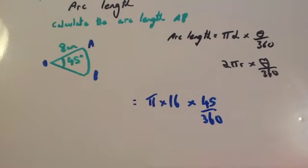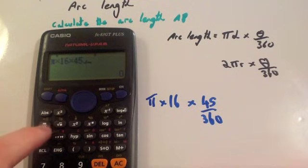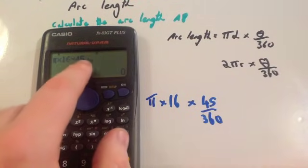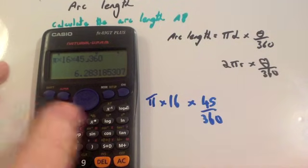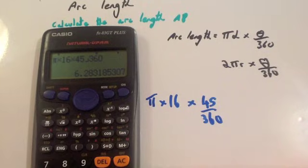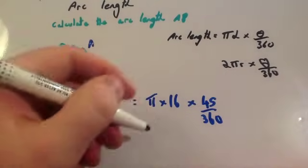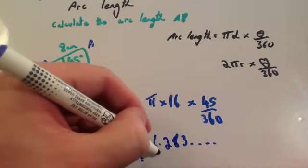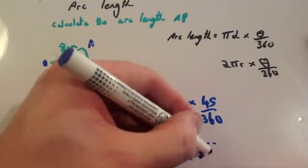You can just type that into your calculator: shift pi times 16 times 45 over 360. Some people may have the calculator in maths mode, so you'd need to go down to the denominator, over 360, then press equals. The arc length of AB is 6.283185307, so the arc length is 6.28 centimetres to two decimal places.